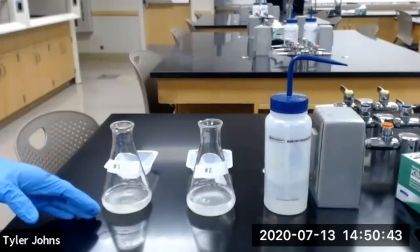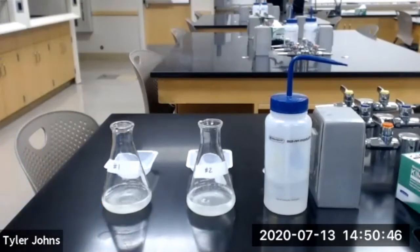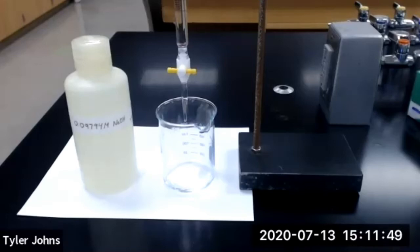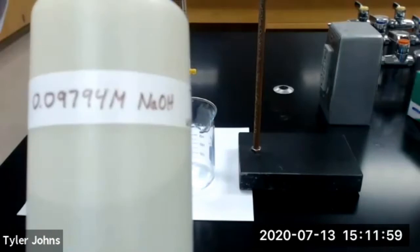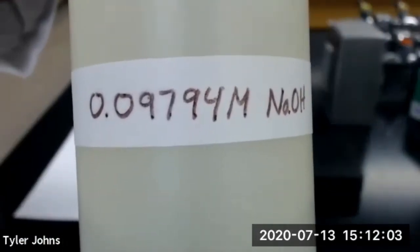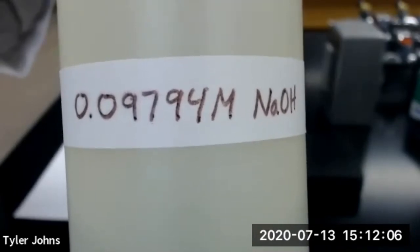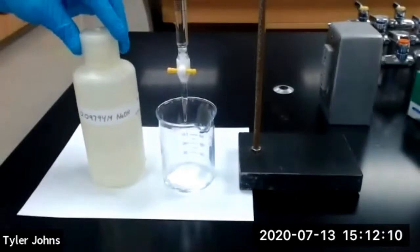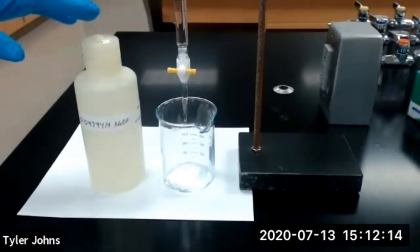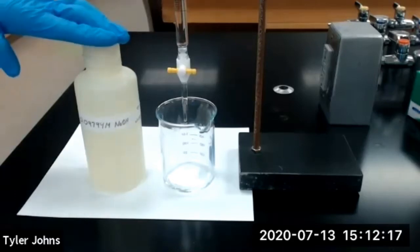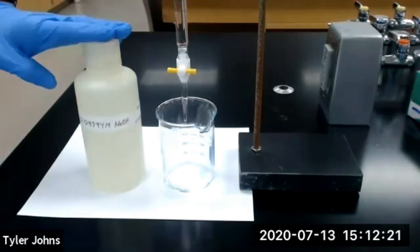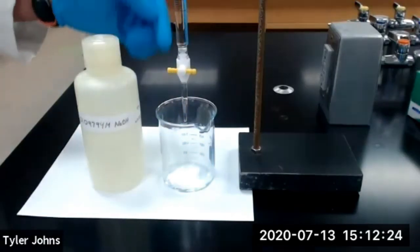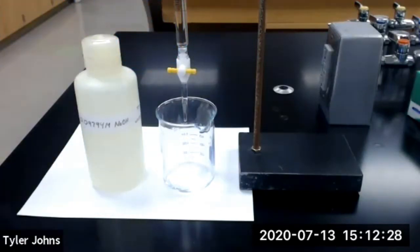While we allow the vitamin C to dissolve in the deionized water, we'll set our burette up for titration. I prepared our burette by washing it with deionized water and a small amount of soap, then rinsing it several times with deionized water. I then rinsed our burette with 5 milliliters of our previously standardized sodium hydroxide solution, which is 0.09794 molar sodium hydroxide. I dumped that wash into the waste beaker, filled our burette with the standardized sodium hydroxide solution, and opened the stopcock to allow some solution to flow through the tip to remove any bubbles. Our burette is now prepared for titration.